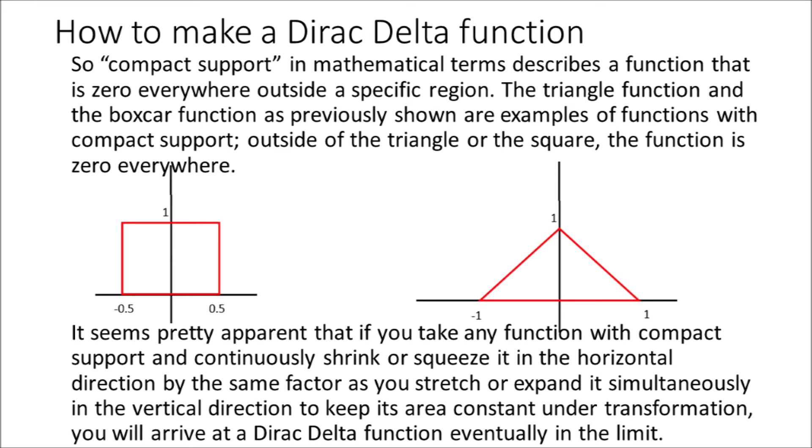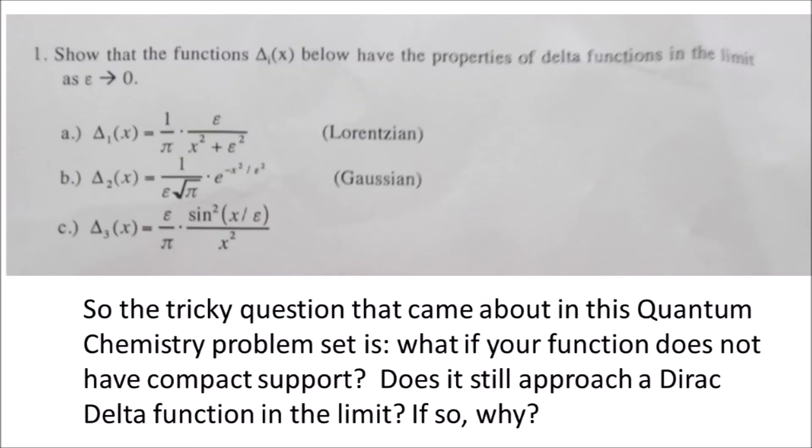Compact support in mathematical terms describes a function that is zero everywhere outside a specific region. The triangle function and the boxcar function are examples of functions with compact support — outside of the triangle or the square, the function is zero everywhere. It seems apparent that if you take any function with compact support and continuously shrink it horizontally by the same factor as you stretch it vertically to keep its area constant, you will arrive at a Dirac delta function in the limit. The tricky question from the quantum chemistry problem set is: what if your function does not have compact support?